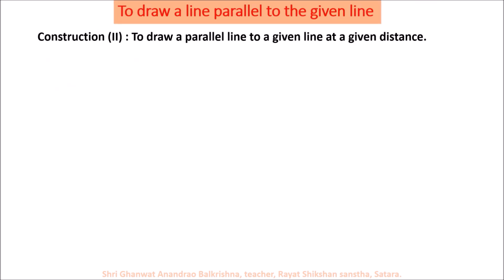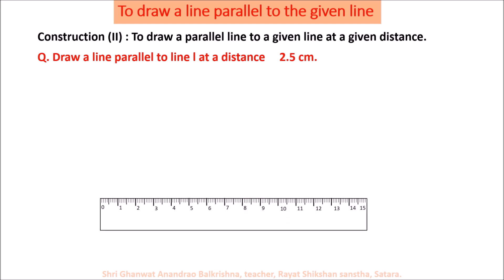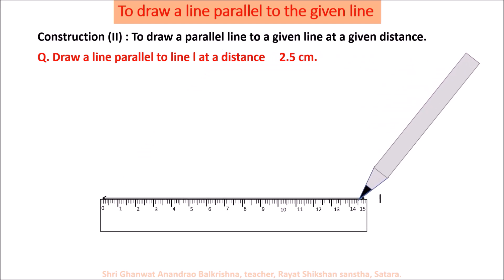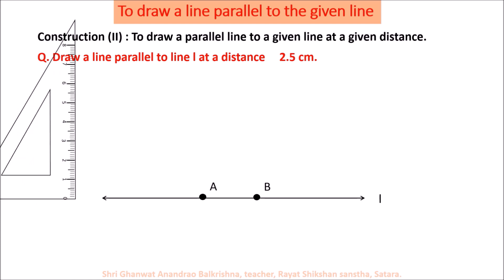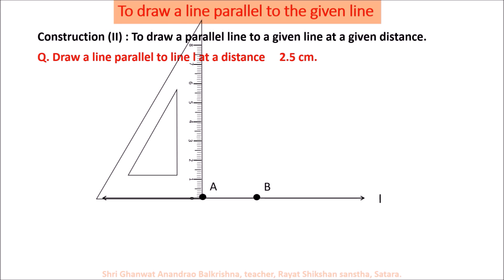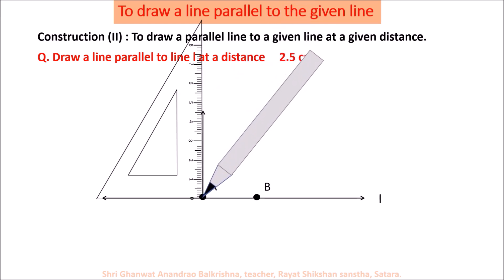Now consider another question: draw a line parallel to a given line at a given distance of 2.5 cm. Take a ruler and draw line L. On line L, take two distinct points A and B. Use the set square to draw a perpendicular at point A, then take point P on this perpendicular exactly at 2.5 cm from line L.